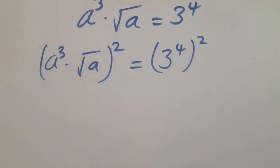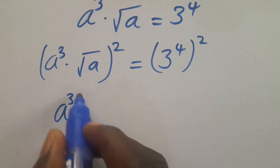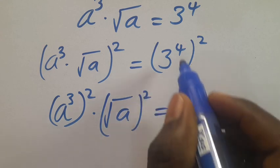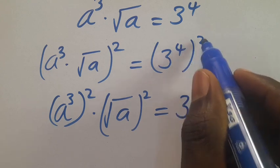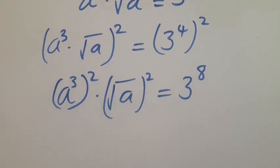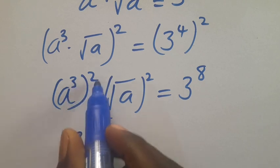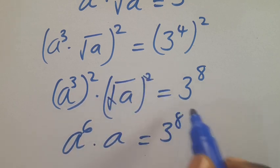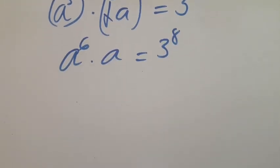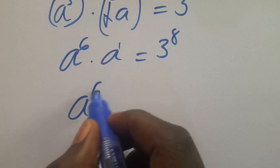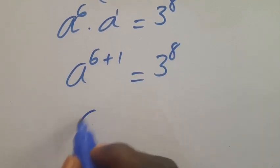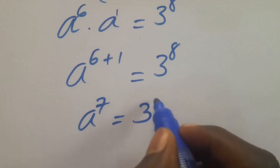Let's square it again. We get a to the power of three in parentheses squared, multiplied by root of a squared, because the right side to the four times two gives us eight. So we have a to the power of six multiplied by a equals the right side to the power of eight. This gives us a to the power of six plus one equals the right side to the power of eight.